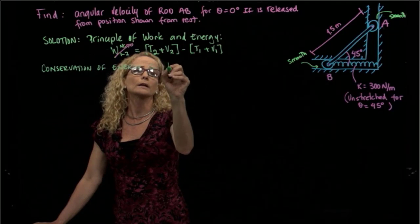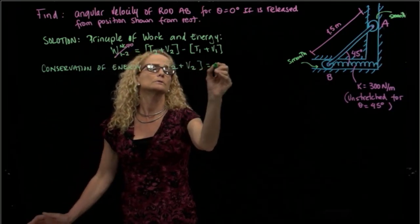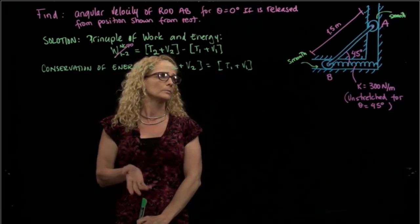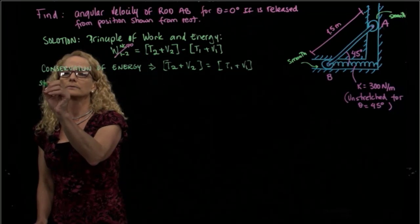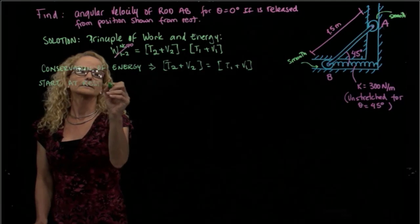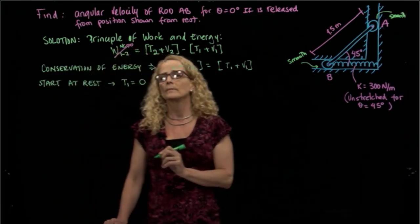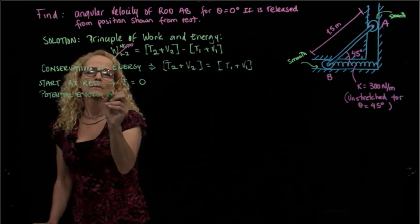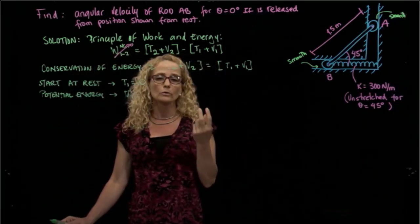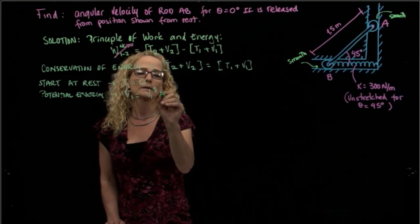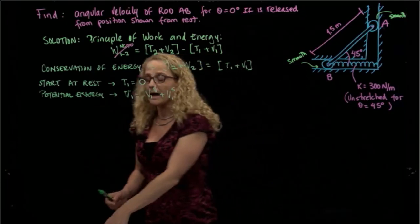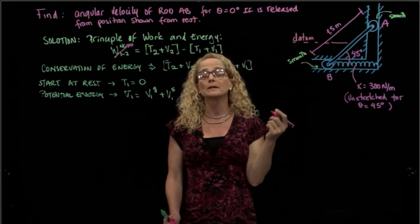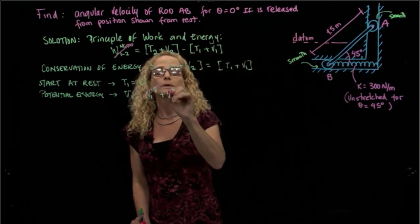So we actually have a problem of conservation of energy. The total energy in position two equals the total energy in position one. Let's start from position one. Since we start at rest, we can say that the kinetic energy is zero. For potential energy at position one, we place a datum at the center of gravity of the bar. Since the spring is unstretched in that position, the potential energy is zero there.